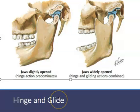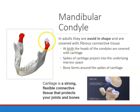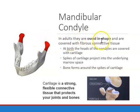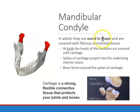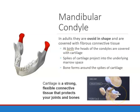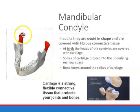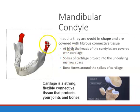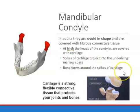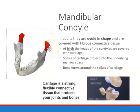In adults, the condyles are ovoid in shape — basically oval at the very top. When you're born, the heads of the condyle are covered with cartilage, which is a strong white tissue that protects the joints and bones. This cartilage sits on top of the condyles and is really thick at birth. As we get older, bone forms around the spikes of the cartilage, and the cartilage covering the condyle wears away.